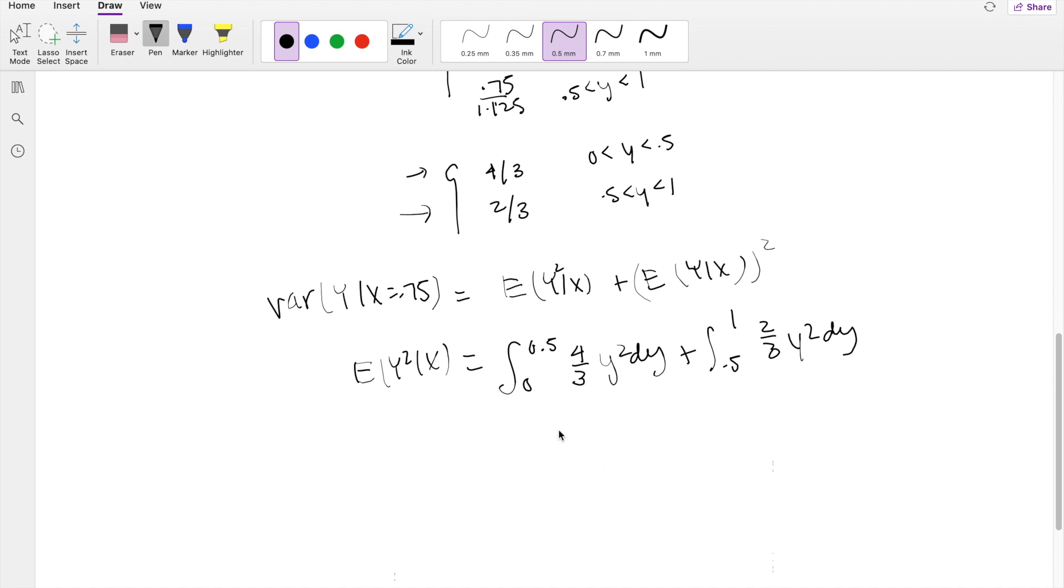So take an antiderivative here, you get y cubed, 4 ninths, integrating from 0 to 0.5, plus 2 thirds, y cubed, so this would be 2 ninths actually, integrated from 1 to 0.5. So on this side right here, the lower limit is just going to give you 0, so you can just plug in 0.5 cubed, plus 2 ninths, right here, it's going to be 1 cubed minus 0.5 cubed, so this is equal to 1 fourth.